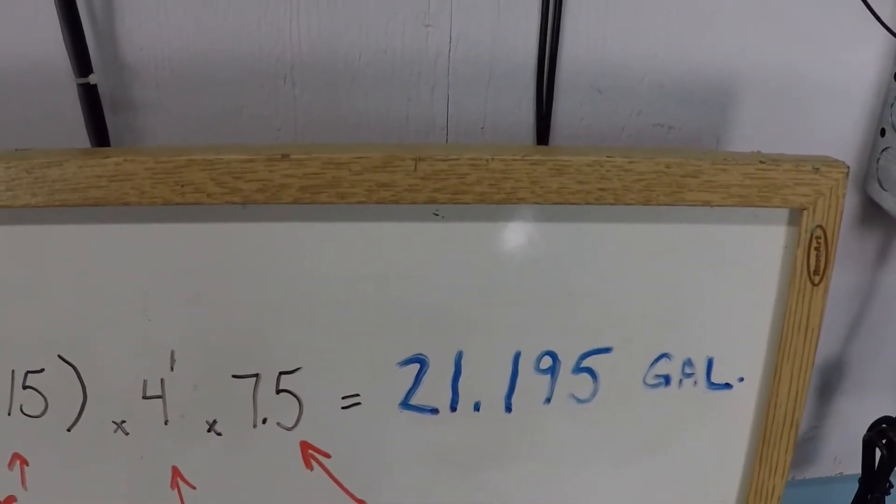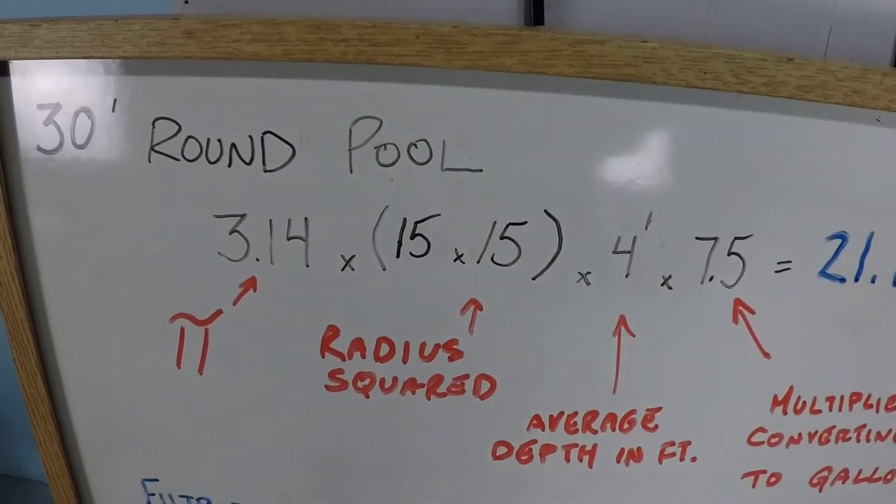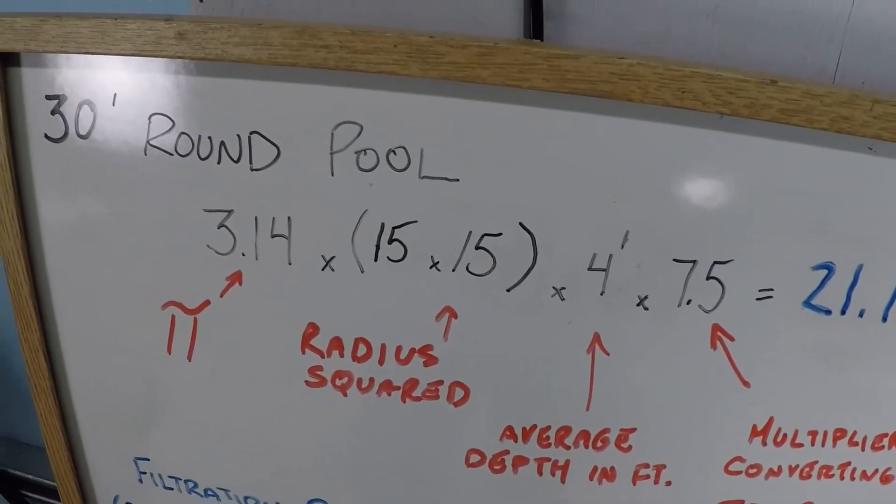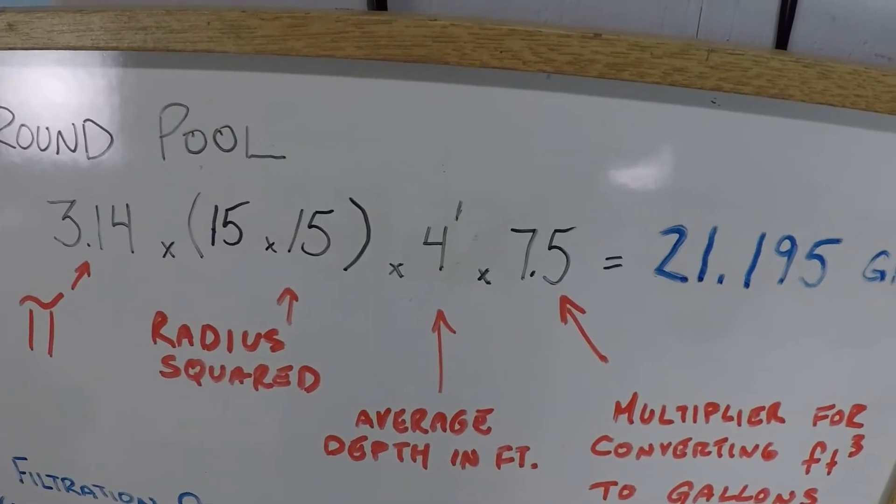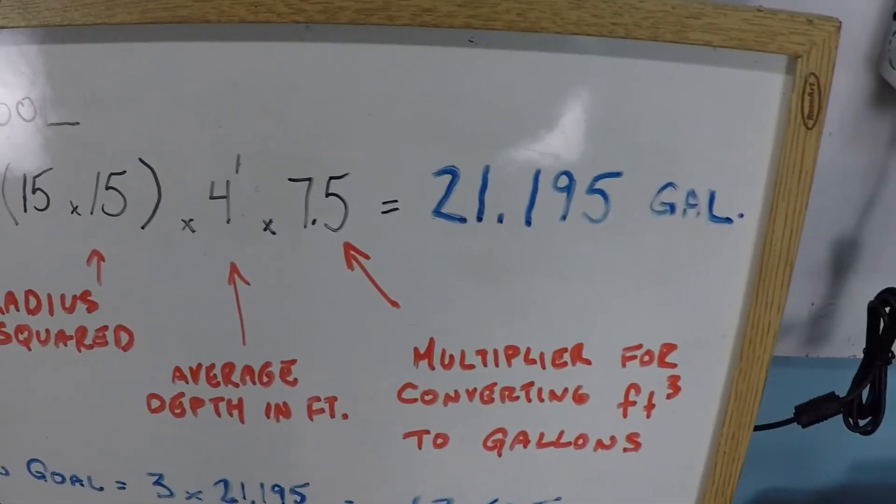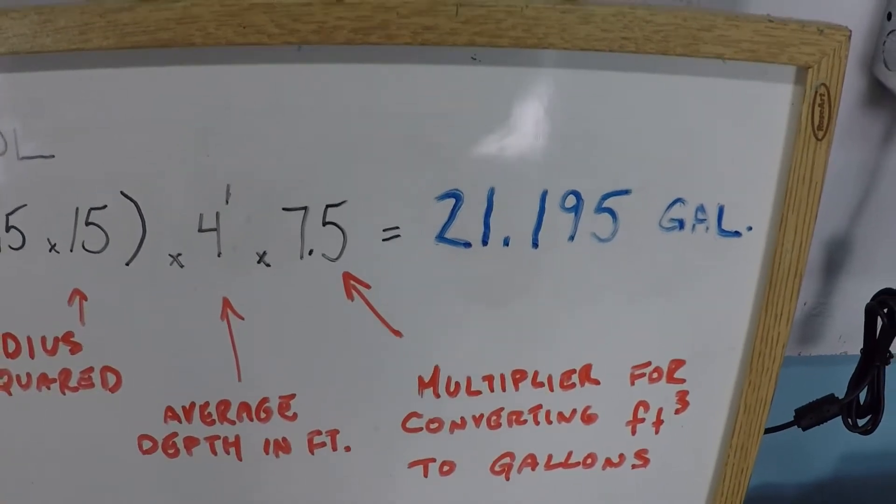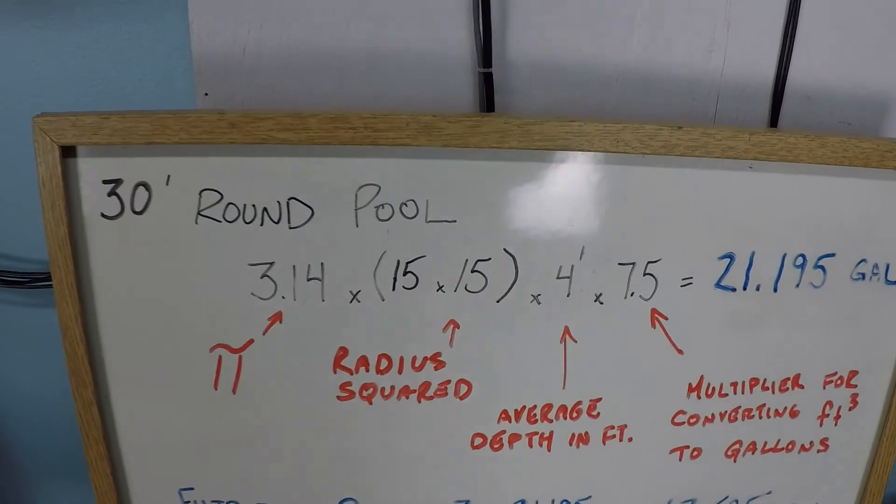This one we're going to work with is 21,195 gallons and the reason that we know this is 3.14 pi times r squared, 15 times 15, times the average depth in feet, in this case 4 feet, times 7.5 which is a multiplier for converting cubic feet into gallons. 21,195 gallons for this 30-foot round pool.